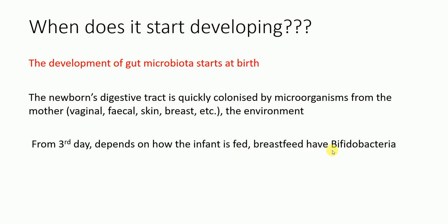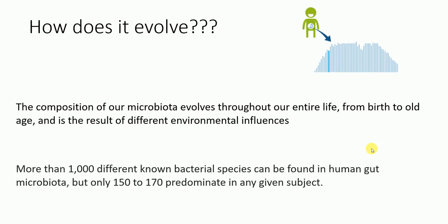Breastfed babies have bifidobacteria. The development of microbiota starts right at birth and its composition evolves throughout our entire life, from birth to old age, influenced by environmental and dietary factors. More than 1000 different known bacterial species can be found in the human gut microbiota, but only 150 to 170 predominate in any given subject.